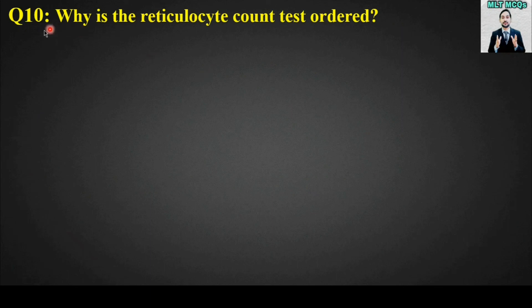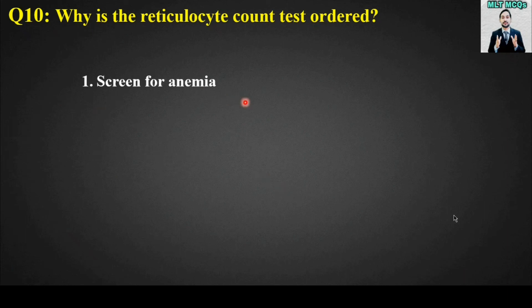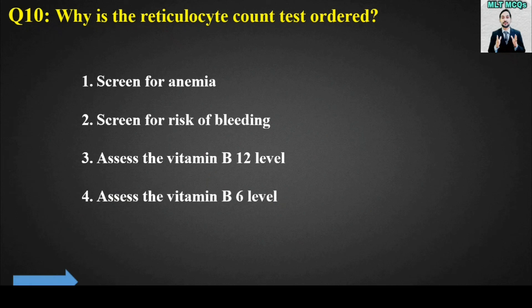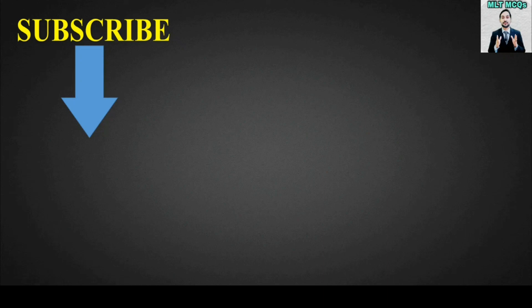MCQ number ten: Why is the reticulocyte count test ordered? Options: screen for anemia; screen for risk of bleeding; assess the vitamin B12 level. The right answer is option number one — the reticulocyte count test is ordered to screen for anemia. Thanks all for today. Like this video and share it with your friends. Take good care of yourself. Allah Hafiz.